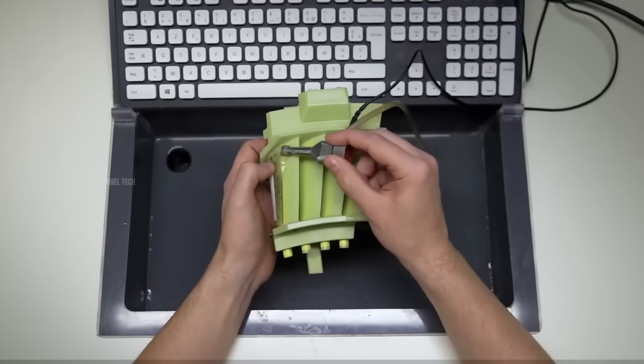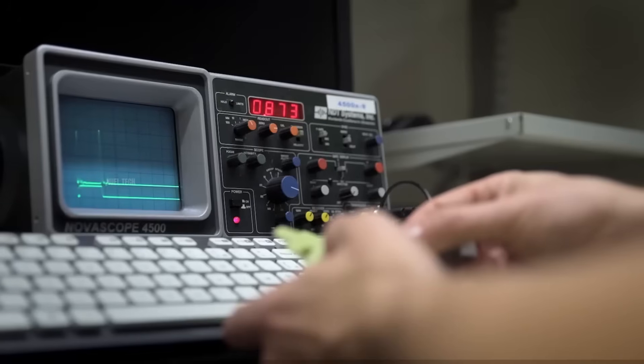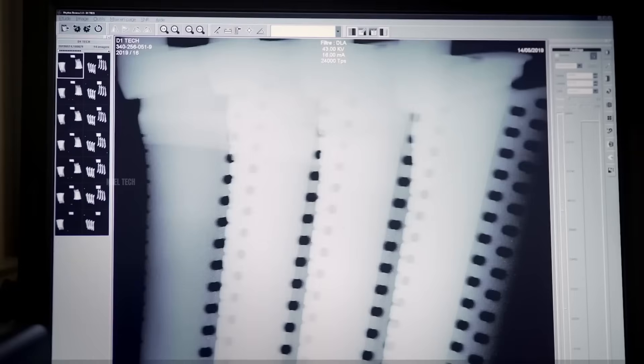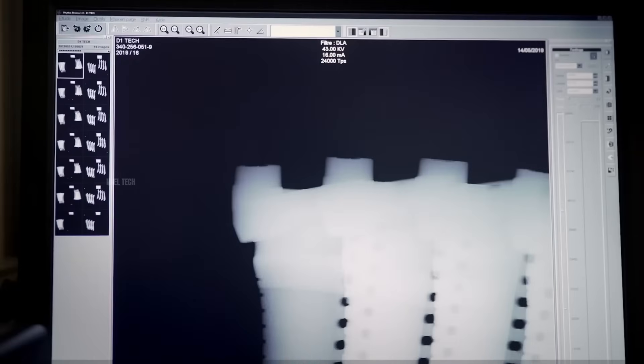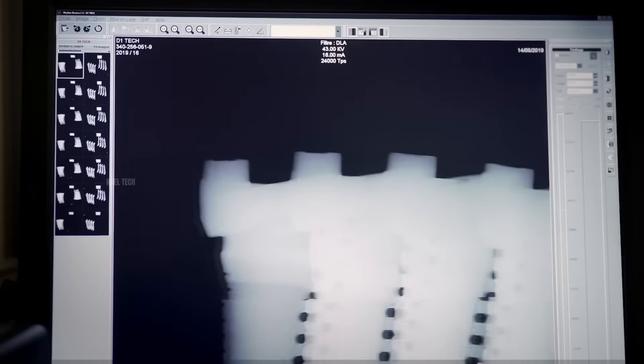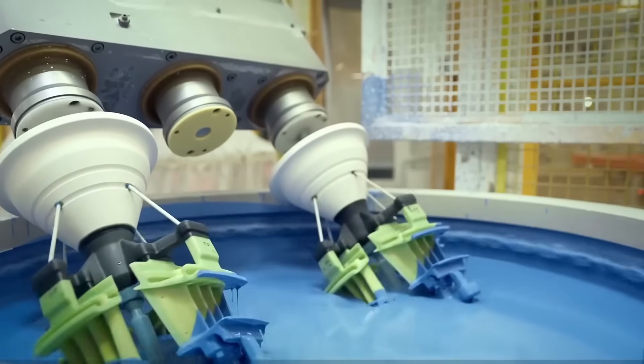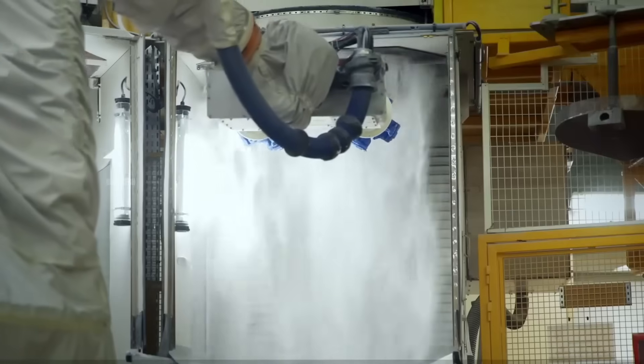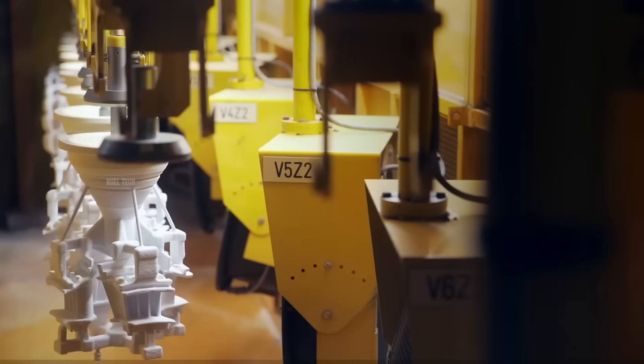This wax model is then inspected using radiographic and ultrasonic methods to ensure the core is correctly positioned. After that, the wax pattern is repeatedly dipped into a ceramic slurry and coated with ceramic powder to build up a thick ceramic shell.